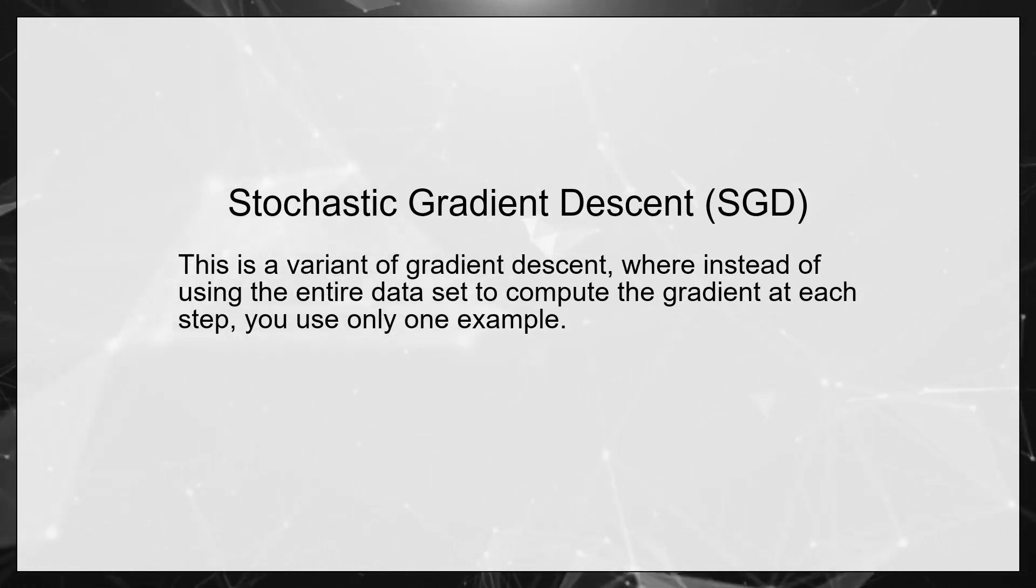Stochastic Gradient Descent, SGD. This is a variant of gradient descent where instead of using the entire data set to compute the gradient at each step, you use only one example.